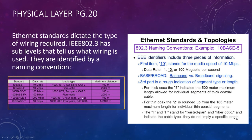Comparing twisted pair to fiber on the chart, there are huge differences in the distance we can travel. In a nutshell, fiber optics go way farther with way better data transfer than any type of wired copper transmission system.